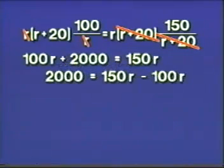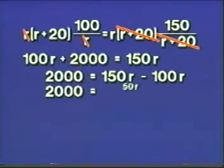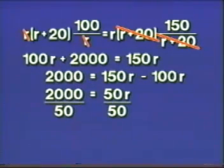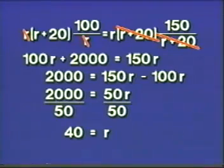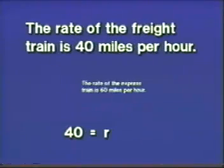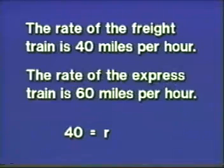To continue the solution, we subtract 100R on both sides, and on the right we collect to get 50R. Then we divide both sides by the coefficient of R, dividing by 50. We get a nice cancellation on the right and find that the left equals 40. So 40 equals R. The rate of the freight train is 40 miles per hour, and since the express goes 20 miles an hour faster, the rate of the express train is 60 miles per hour.